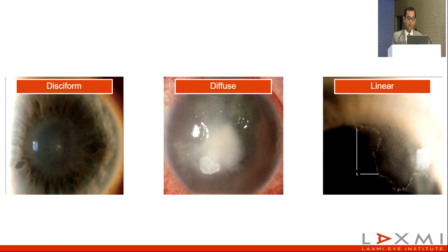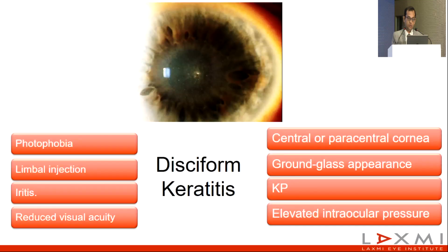The three different forms are the disciform type, which is the most common, diffuse endothelitis, and linear endothelitis. In disciform endothelitis, we see photophobia, limbal injection, uveitis, and reduced visual acuity due to its location. There is also central or paracentral corneal edema, a ground glass appearance, KPs, and elevated IOP due to uveitis and trabeculitis.